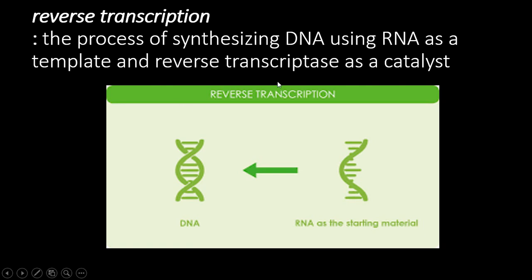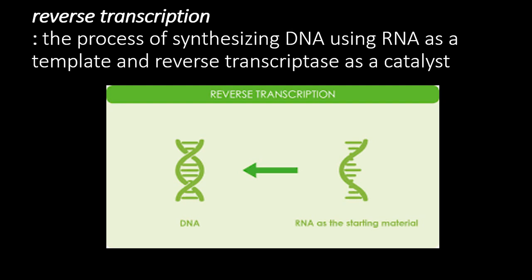A retrovirus has an RNA genome. A virus cannot survive inside a host without the host's machinery because the host genome is DNA while the viral genome is RNA. So the virus undergoes a process called reverse transcription, using an enzyme called reverse transcriptase, which helps copy the information from RNA back into DNA — a reversal of transcription — catalyzed by reverse transcriptase.